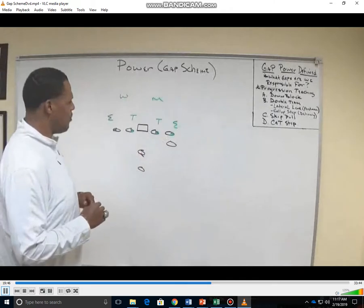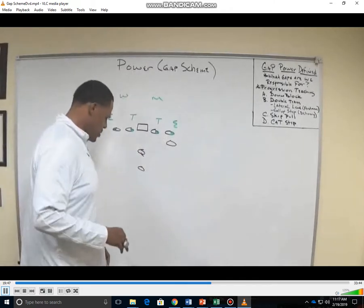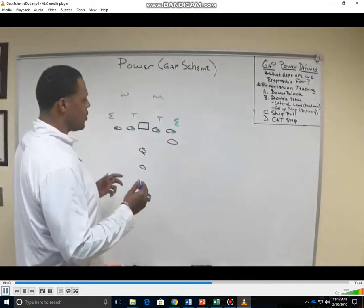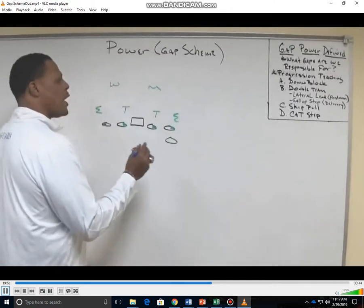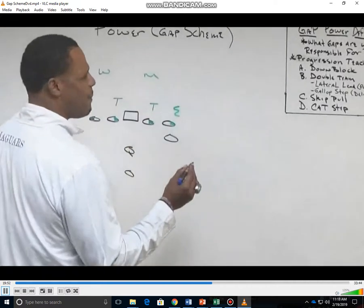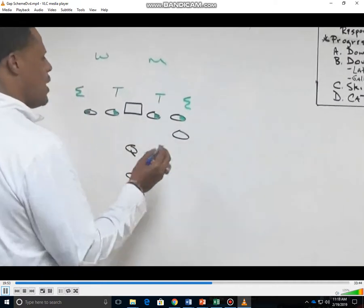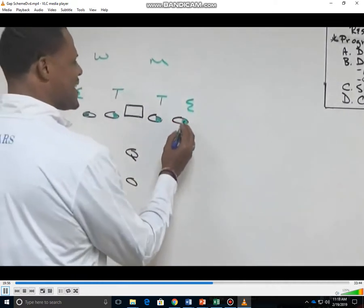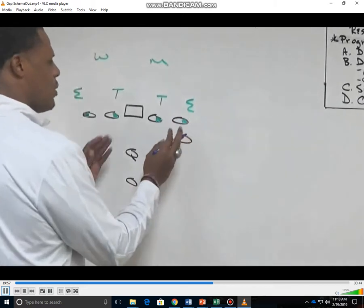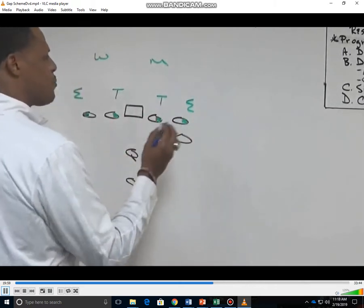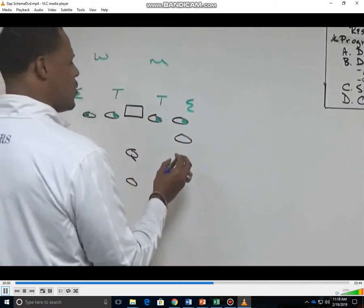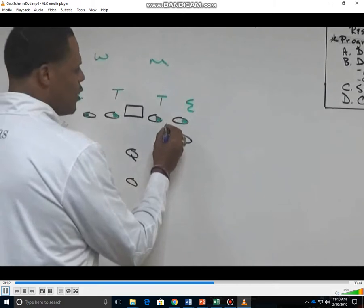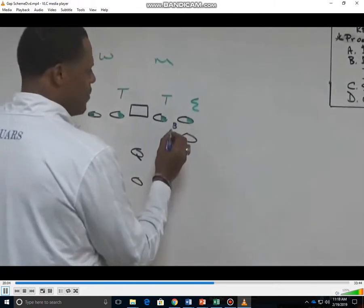First thing you must understand about power and gap scheme in general is everybody's responsible for a gap. The way we teach it here at Southern University — say we're running power to the right — this playside tackle is technically responsible for the inside B gap.